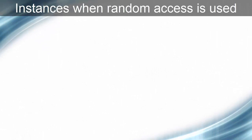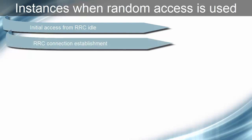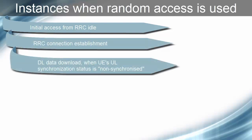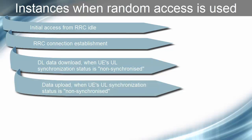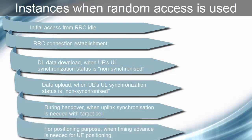Till now, we discussed only one case in which random access was needed, that was initial registration after boot up. But there are many instances when random access is needed. These instances include: initial access from RRC idle for RRC connection establishment, downlink data download when UE's uplink synchronization status is non-synchronized, data upload when UE's uplink synchronization status is non-synchronized, during handover when uplink synchronization is needed with target cell, and for positioning purpose when timing advance is needed for UE's positioning.